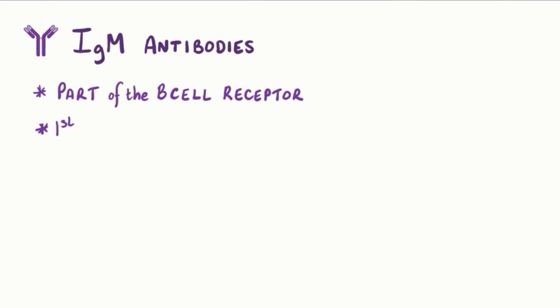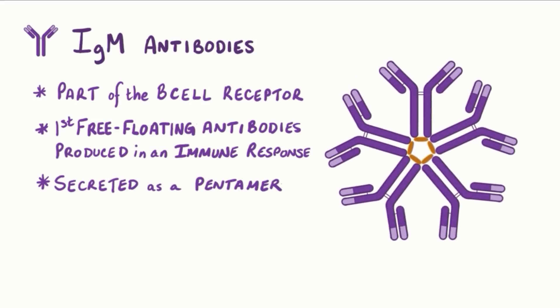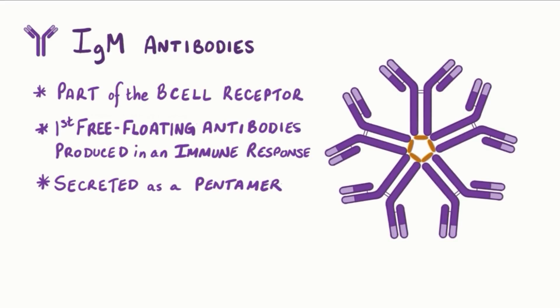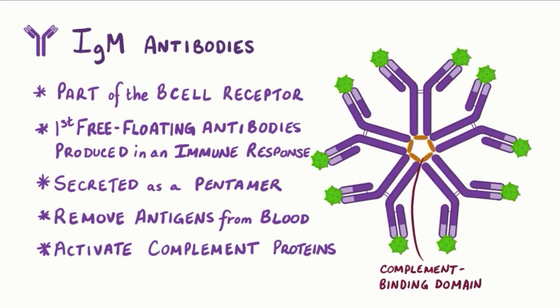For example, IgMs are part of B cell receptors and are the first free-floating antibodies produced in an immune response. They are secreted as a pentamer, meaning there are five antibodies connected together, which provides a ton of binding sites for grabbing antigens and taking them out of the blood. Each antibody has complement protein binding sites on the heavy chains, so these IgM pentamers are also great at activating complement proteins, which help destroy and remove pathogens.